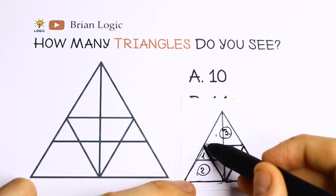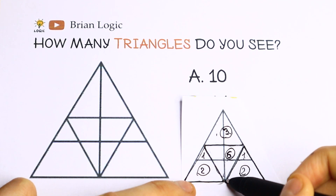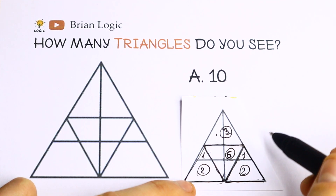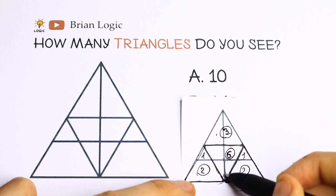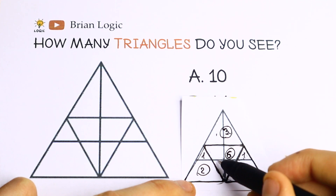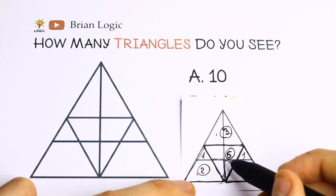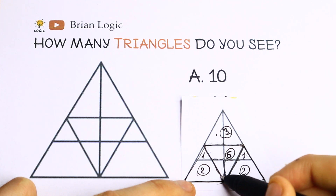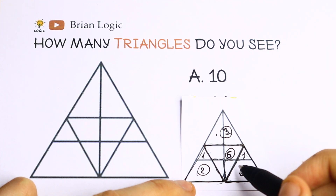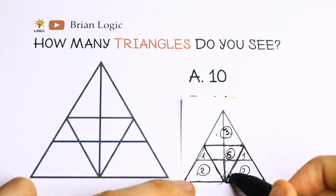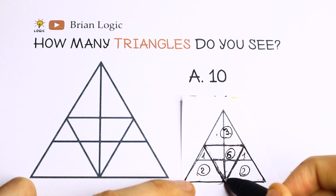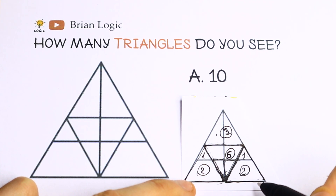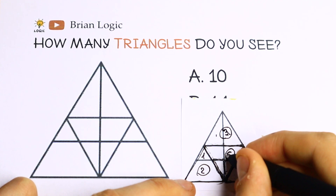Let's go inside these bigger triangles. How many triangles will we have right here? We will have one, this one, a second one, two, three, four. And of course if we add two parts we will have five, and the sixth one is the bigger one. So inside we will have six triangles.